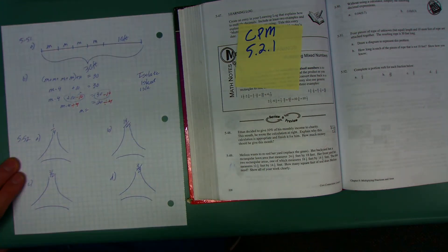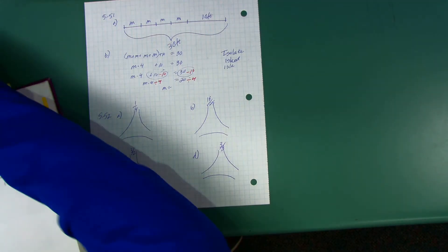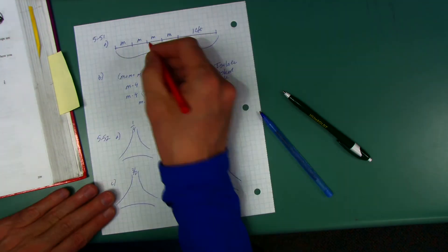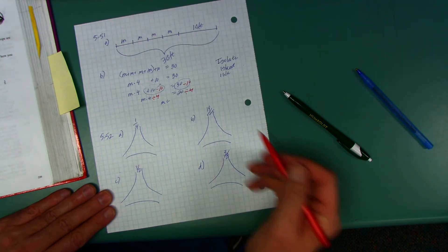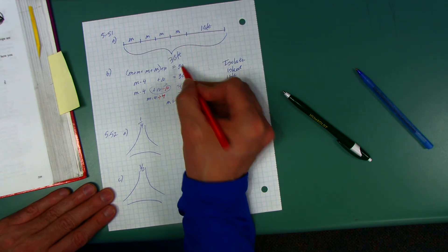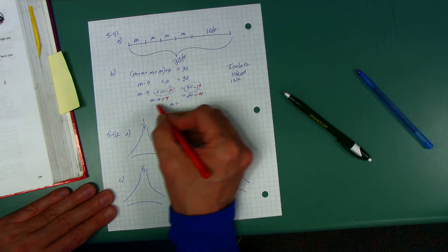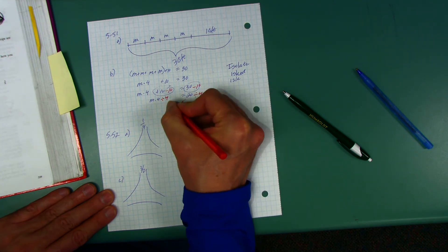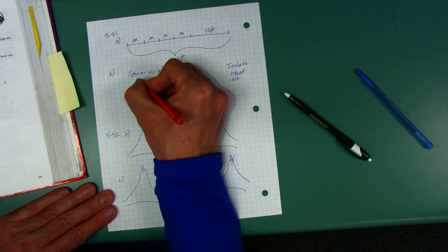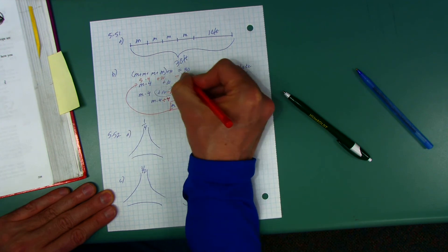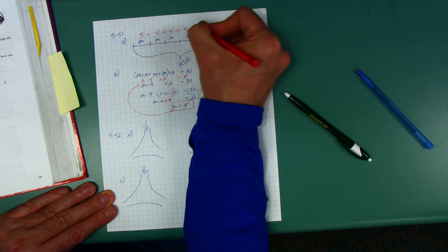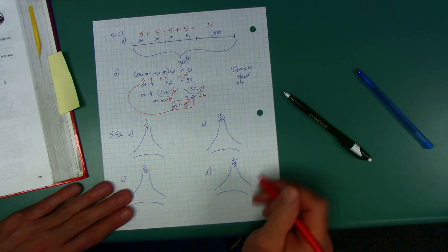Problem 551 — remember we had those ropes, and we had a number of ropes that were the same size. We had 4 that were the same size plus 10, and in total that was 30 feet. We wrote the expression M plus M plus M plus M plus 10 equals 30 — you didn't have to use M for your variable. That equals 4M plus 10 equals 30, and we got all the way down to M equals 20 divided by 4, which is 5. Now you aren't done — go back and substitute M in. 5 times 4 plus 10 equals 30? 20 and 10 is 30. Or go back to 5 plus 5 plus 5 plus 5 plus 10 equals 30. It does. Good job.